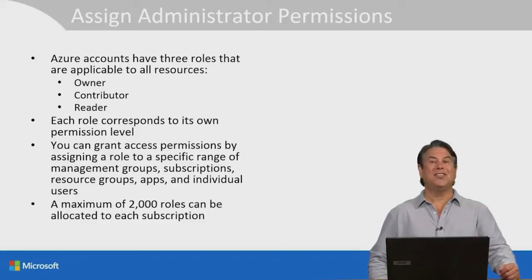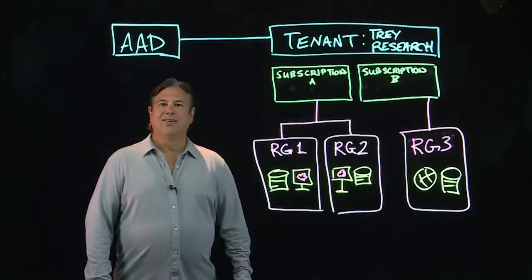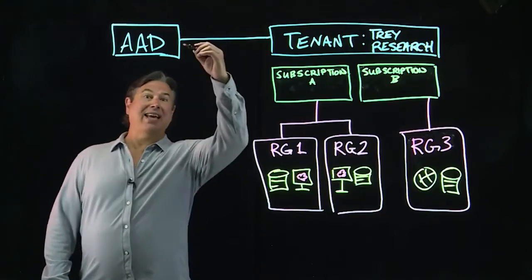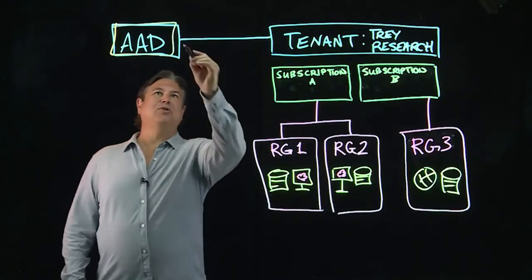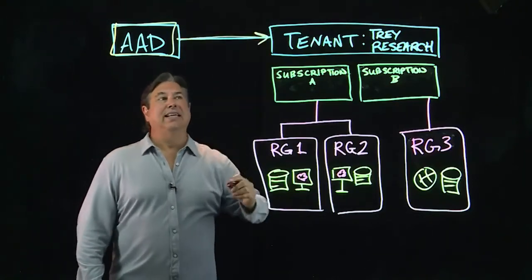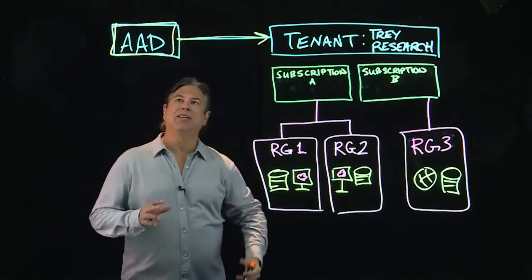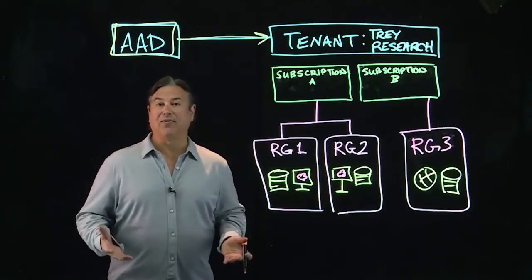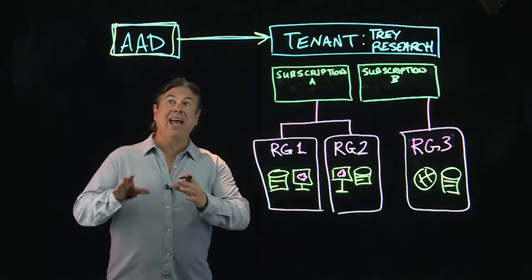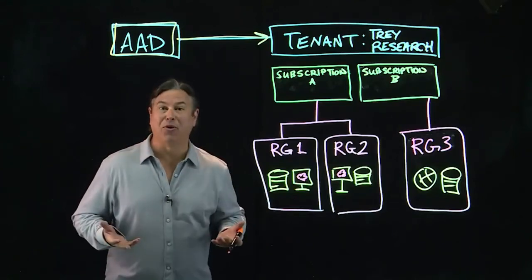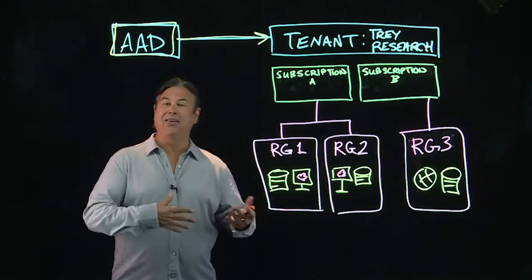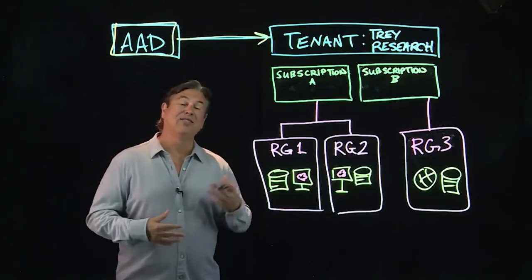Since this is our first lesson, let's pop over to the lightboard and see how Azure Active Directory and tenants work together. At the top of the management chain, we have AAD — Azure Active Directory — and that is tied directly to the tenant. Each tenant has its own directory. What's really cool is if you already have an account with Microsoft, like an Outlook.com account, you already have your own virtual Azure Active Directory just waiting there for you to activate.